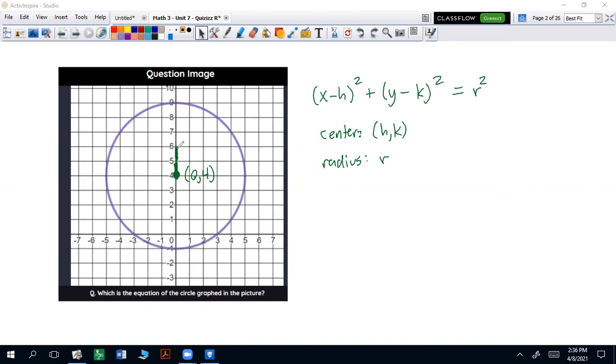That's going to be one space, two spaces, three spaces, four spaces, and five spaces. So you can see the radius is going to be five. And if you count it in any direction—one, two, three, four, five—it doesn't matter. The radius is five.